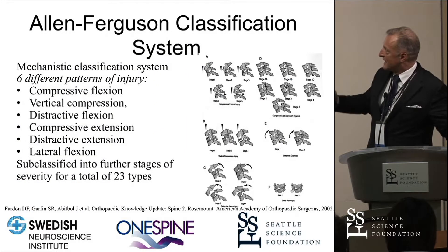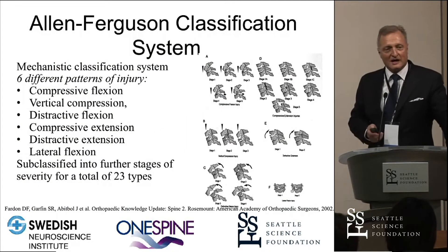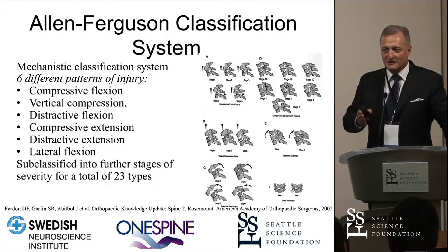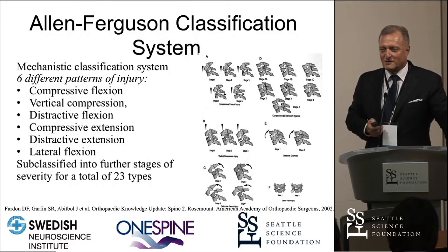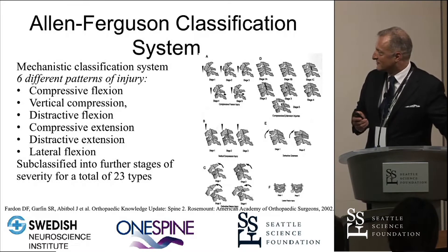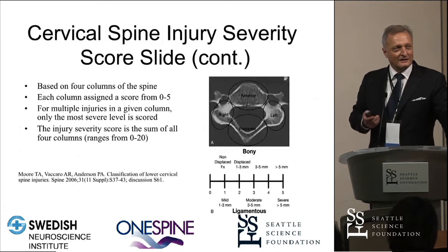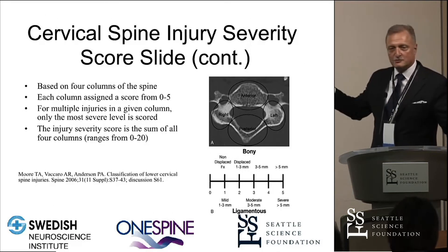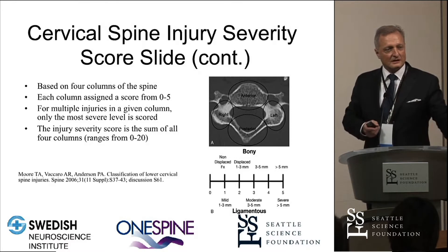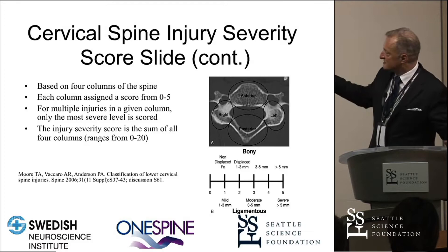All of us were raised, for instance, in the Alan Ferguson system, which had 23 subtypes, and it was just an endless torture for excellent young fellows like Dr. DiLorenzo to try to remember the various stages of flexion injuries. A huge breakthrough was to try to really scale injuries towards severity, which so much matters in terms of patient outcomes and the types of treatments we have.